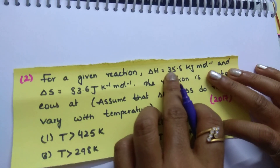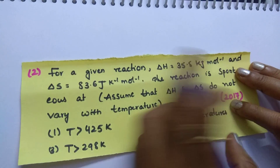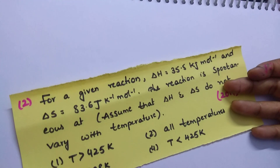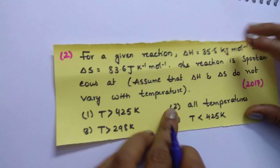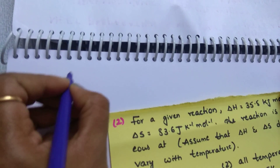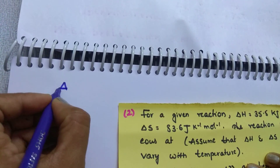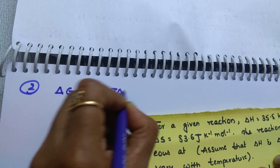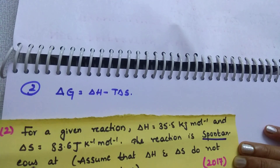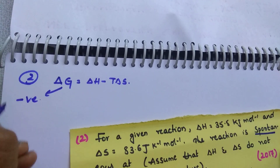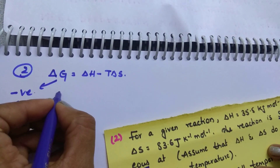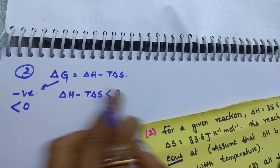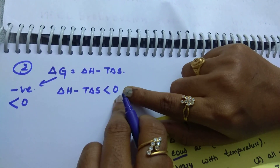For the next question: delta H is given as 35.5 kilojoule per mole and delta S is given. The reaction is spontaneous at which temperature — greater than 425, greater than 298, or less than 425? The formula for this is delta G equals delta H minus T delta S. The condition for spontaneous reaction is delta G should be negative, i.e., less than 0.